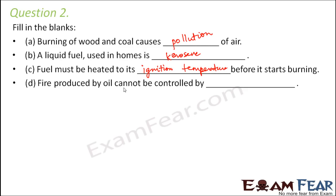Fire produced by oil cannot be controlled by water. We have different ways to control fire — water or carbon dioxide. Water cannot be used in some cases, such as electrical equipment or oil fires, because oil and water do not mix with each other. Water controls fire by reducing the temperature of the substance, but since water doesn't mix with oil, it cannot reduce the temperature. So fire caused by oil will not be controlled by water.